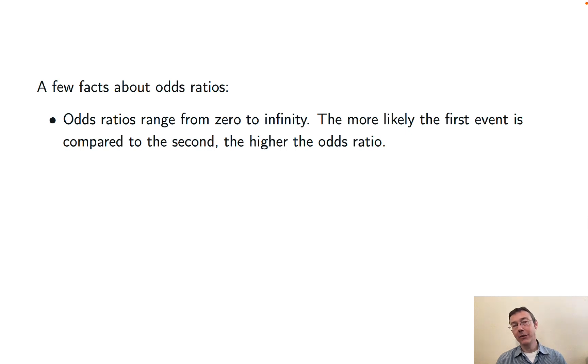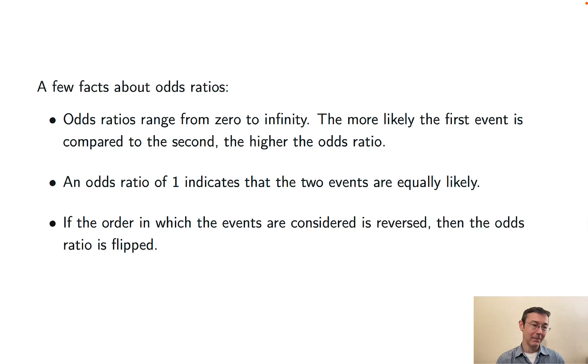Here are a few more facts about odds ratios that can help build a little intuition. Odds ratios, like odds, can range from zero to infinity. The more likely the first event is compared to the second, the higher the odds ratio. If you have an odds ratio of one, then the two events are equally likely. And if you flip the order that you're considering the events, then that's going to give you the reciprocal of the odds, it's going to flip the odds ratio.